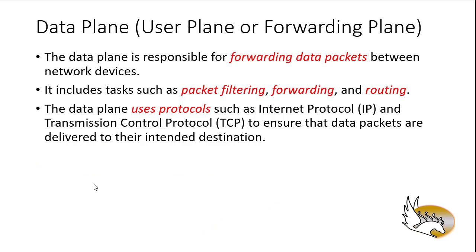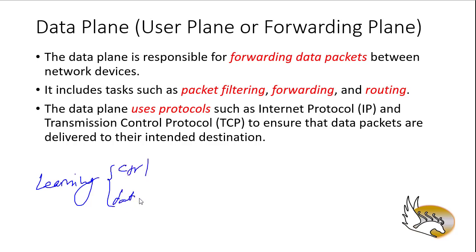Now that you know about data plane, control plane, and management plane, there are two more things to add. The process of learning — knowing about destinations — can be done through either the control plane or the data plane. For control plane learning, you already know many examples: routers have adjacencies, and through those adjacencies they send and receive information about the prefixes they are connected to.